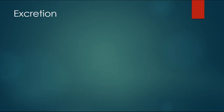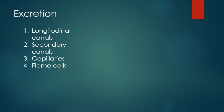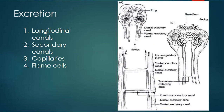The excretory system of Taenia solium consists of four parts: first, the longitudinal canals; second, the secondary canals; third, the capillaries; and fourth, the flame cells. These are the four major units of the excretory system of Taenia solium.